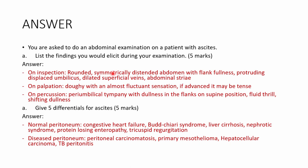For the five differentials of ascites, divide them into two groups. With a normal peritoneum: congestive heart failure, Budd-Chiari syndrome, liver cirrhosis, nephrotic syndrome, protein-losing enteropathy, and tricuspid regurgitation — these involve increased hydrostatic pressure or decreased oncotic pressure. With a diseased peritoneum: peritoneal carcinomatosis, primary mesothelioma of the peritoneal membrane, hepatocellular carcinoma, TB peritonitis, and bacterial peritonitis.